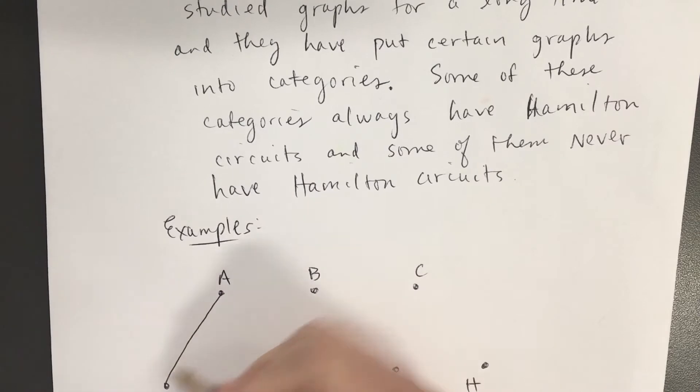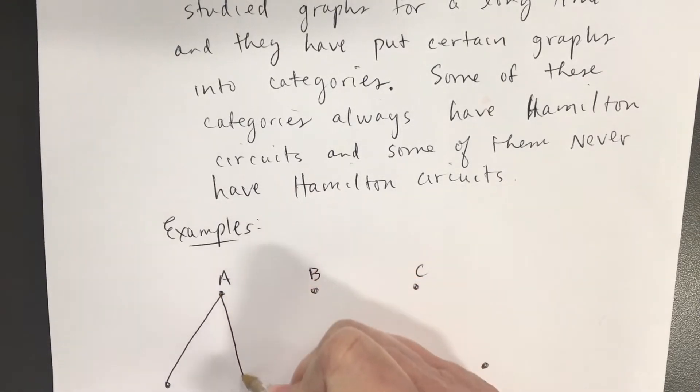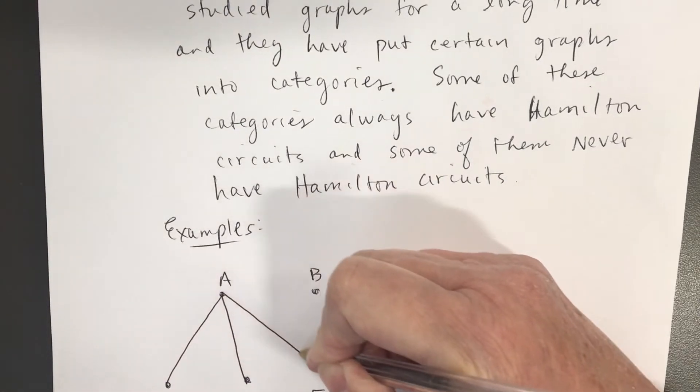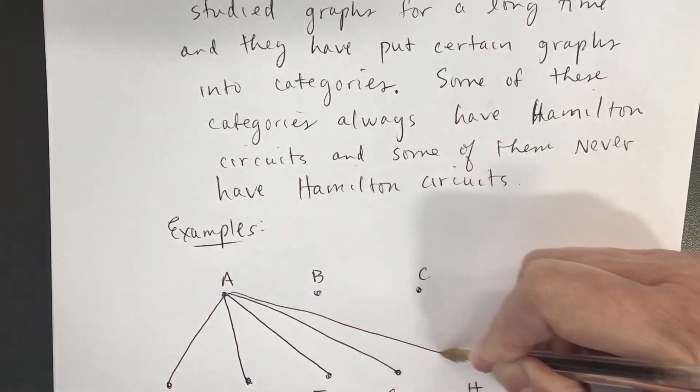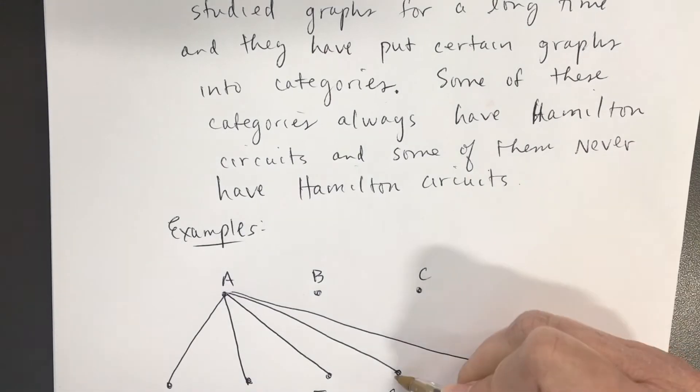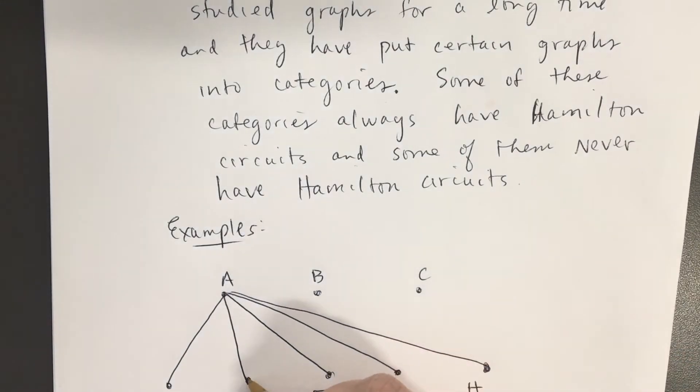So A is going to go A to D, A to E, A to F, A to G, A to H. Now there's going to be a lot of crisscrossing in the middle, but those are not vertices where they look like they might touch.